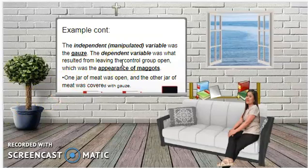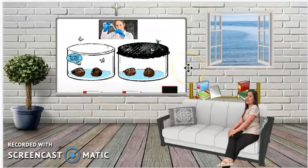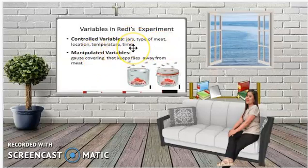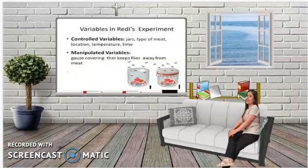The independent (manipulated) variable was the gauze covering. The dependent variable was the appearance of maggots from the open jar. In Redi's experiment, the controlled variables — held constant — were the jars, type of meat, location, temperature, and time. The only manipulated variable was the gauze, making it a fair test. A fair test is very important in science.